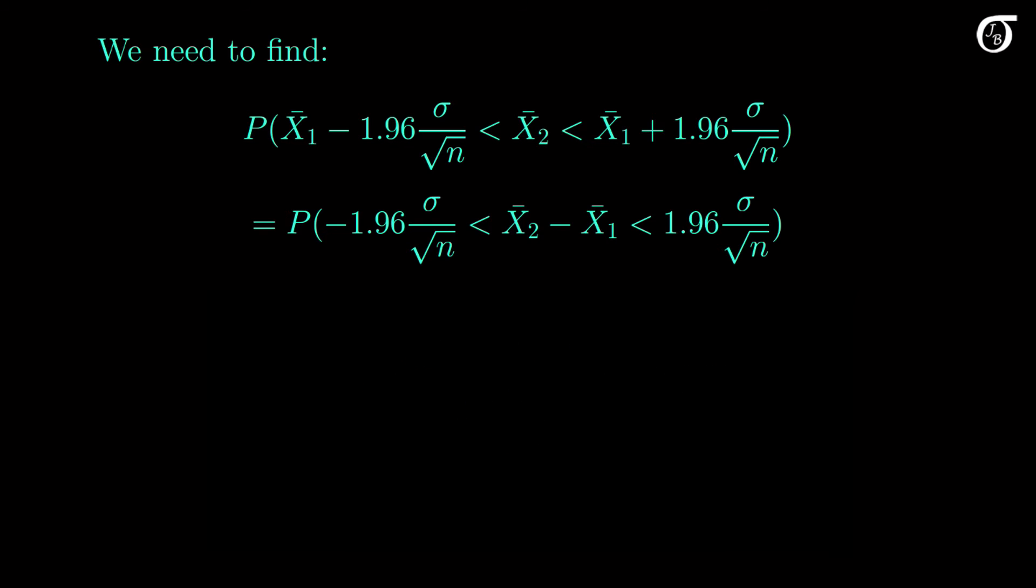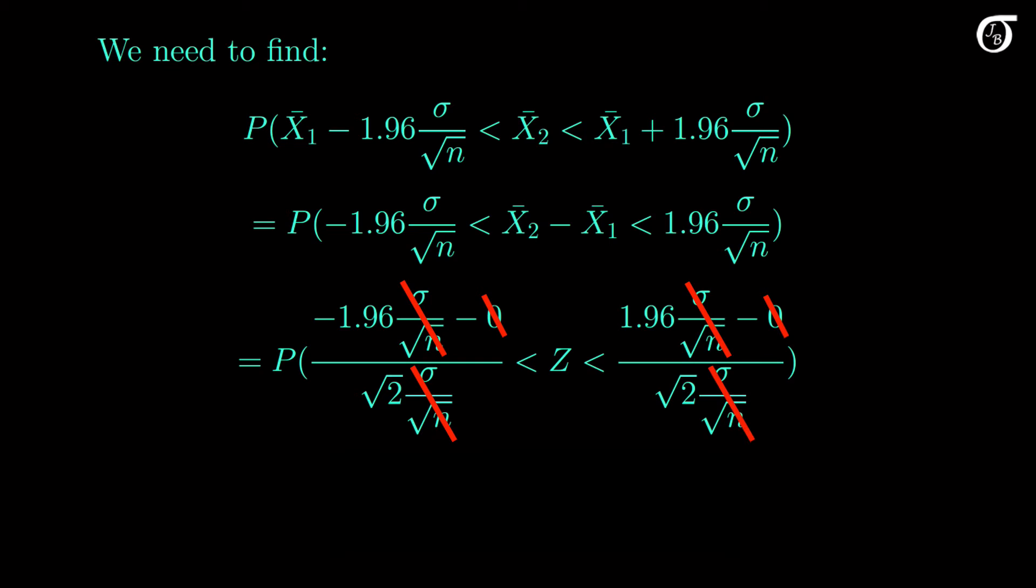After subtracting 0 and dividing by root 2 sigma over the square root of n, we end up with this, where z is a standard normal random variable. And now we can note that sigma cancels out, as does the square root of n, and we're left with this expression, which doesn't involve the population standard deviation or the sample size. And if we go to software to find that area, we find that it's approximately 0.835.